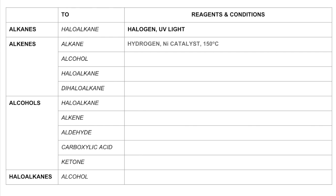For alkene to alkane, you react the alkene with hydrogen using a nickel catalyst at a temperature of 150°C. For alkene to alcohol, you react it with steam — so gaseous water — with an acid catalyst; you could use H₃PO₄, phosphoric